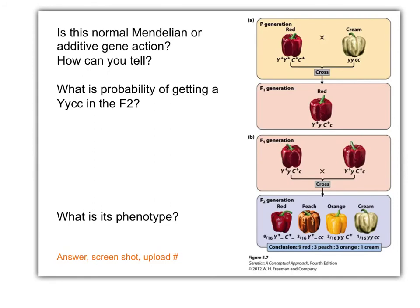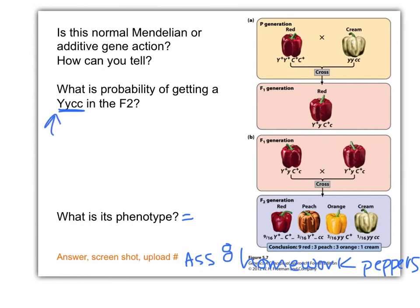Let's take a look at this problem and answer the questions — take a screenshot and upload to assignment number eight. Please work through this problem: Is this normal Mendelian dihybrid, or is it additive gene action? How do you know? Please answer this question. What is the probability of getting this individual in the F2? What's the phenotype of this individual? Work on this, take a screenshot and upload.